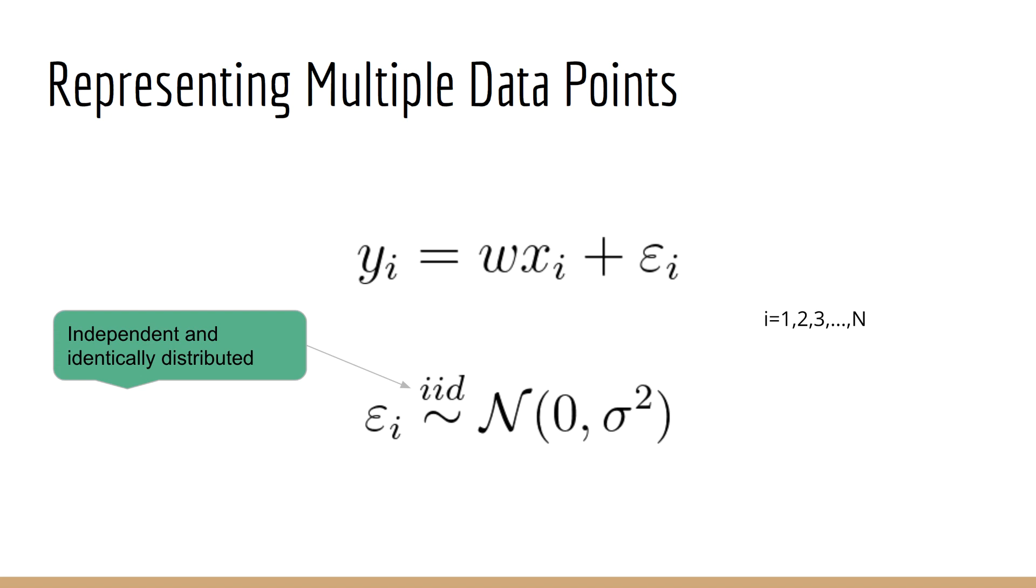One useful notation we need to add is the subscript i, which goes with x, y, and epsilon. As you know, in order to train our model, we need multiple data points. As per our usual convention, the number of data points will be denoted as capital N, and each data point will be indexed by i. So i goes from 1, 2, 3, and so forth, all the way up to N. At this point, we can also state that epsilon is iid normal. This means that each epsilon sub i is independent from the others, and they all come from the same distribution, normal with mean zero and variance sigma squared.